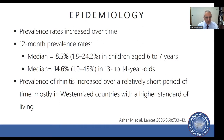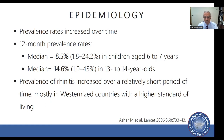Prevalence rates increased over time. The 12-month prevalence rate on median was 8.5 percent in children aged six to seven, and 14.6 percent in 13 to 14-year-olds. The prevalence of rhinitis increased over a relatively short period of time, mostly in Westernized countries with a high standard of living. We have noticed in multiple other settings that the prevalence of allergic diseases is increasing, including that of allergic rhinitis.